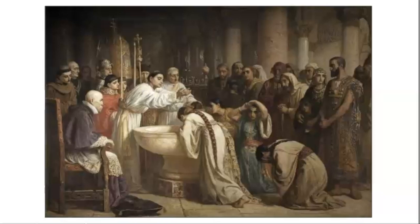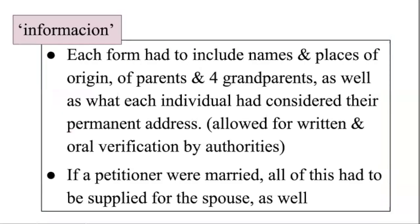These categories had extremely fluid requirements and definitions, but they were all decidedly real in Spanish society, politics, and economics. They had decidedly real consequences when it came to marriage, reproduction, and family formation in Spain, and once the Spanish colonized the Americas, of everyone touched by Spain. A person had to prove their limpieza de sangre to have access to certain jobs, living spaces, and other features related to power. The process: the person who wanted a post, title, or office applied to the local tribunal. The petitioner submitted as much genealogical information as possible—called the informacion—which had to include names and places of origin of parents and grandparents, as well as what each individual had considered their permanent address.